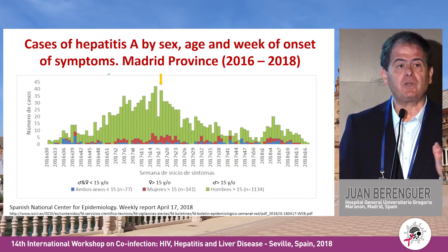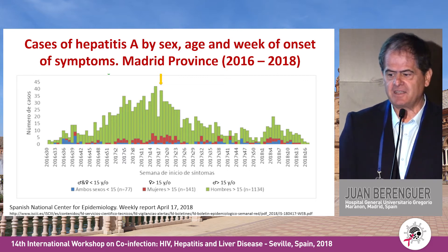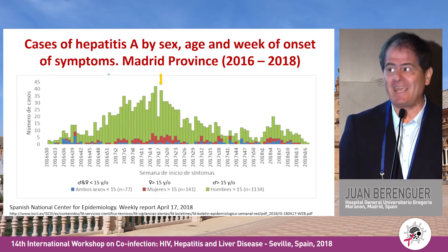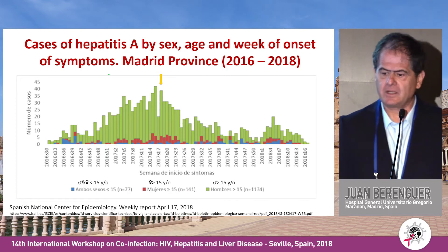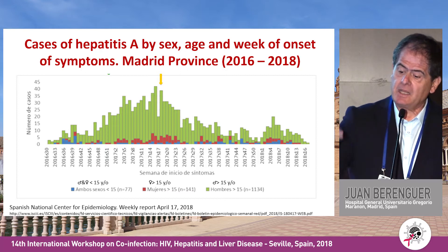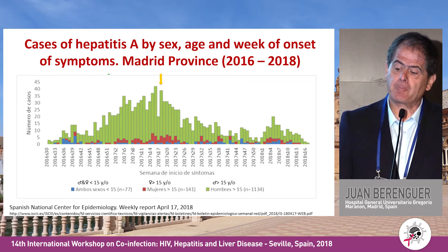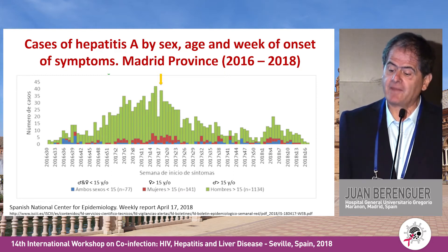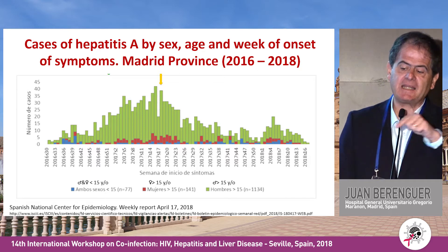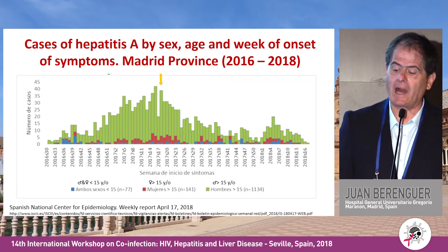This is what happened in Madrid at the end of 2016, through 2017 and 2018 — a large outbreak of hepatitis A, as in many other countries in Europe. Each bar represents a week; green bars are males, red are females, and blue are pediatric cases. Our patient had hepatitis A where the yellow arrow is indicated.